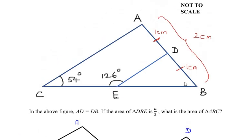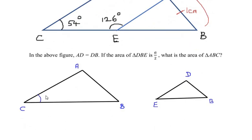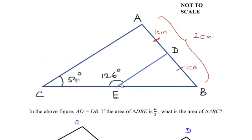Now in triangle ABC, angle C is given as 54 degrees. Coming back to triangle DBE, 126 degrees is acting as an exterior angle to the triangle DBE. CEB is a straight line, so we know that the total angle of a straight line has to be 180 degrees.